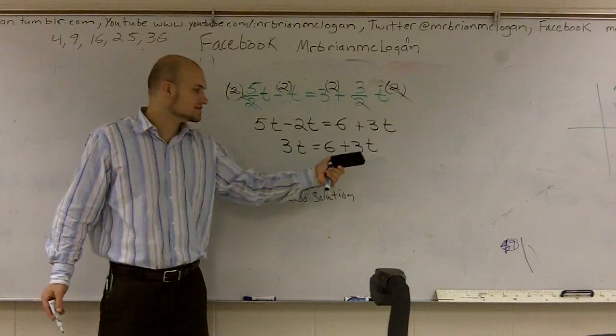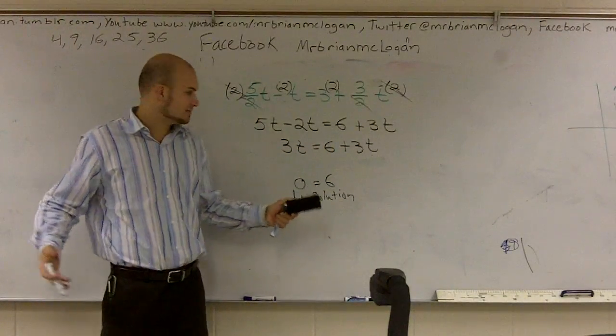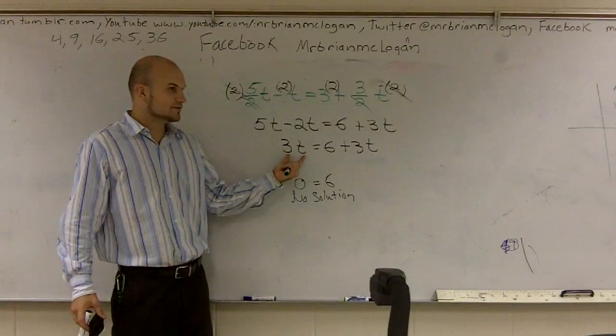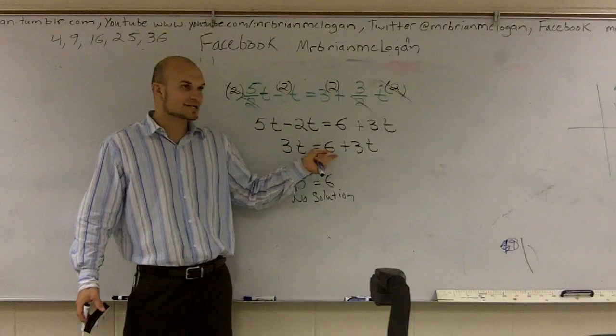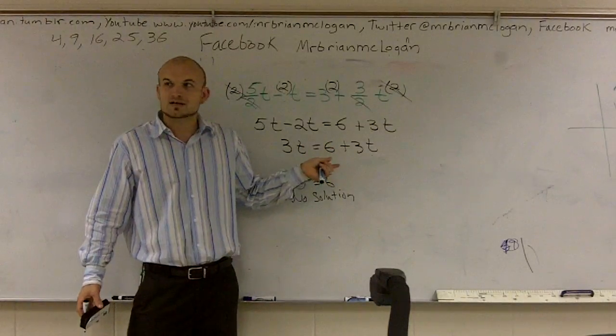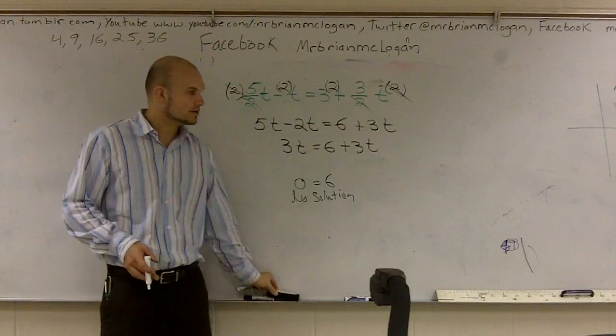So guess what? There's not a number we can use for t that these will ever be equal to each other. Because look at it. Whatever I put in for t here, I have to put that same number for t here. But then on the right side, I'm always going to add 6. So these two are never going to equal each other. So therefore, this is what we call no solution.